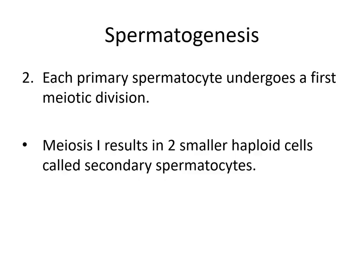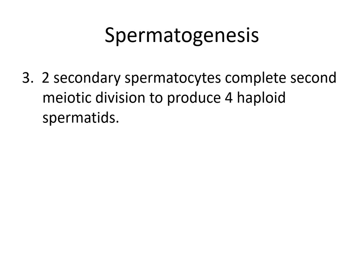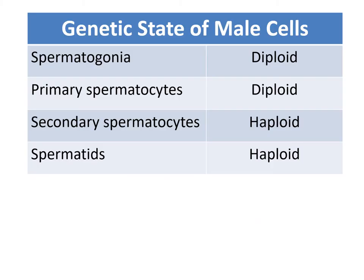Each primary spermatocyte undergoes a first meiotic division — meiosis I — and as a result, two smaller haploid cells called secondary spermatocytes are produced. So secondary spermatocytes are haploid. Then two secondary spermatocytes complete the second meiotic division — meiosis II — to produce four haploid spermatids. In summary: spermatogonia and primary spermatocytes are both diploid, while secondary spermatocytes and spermatids are both haploid, as will be the mature sperm.